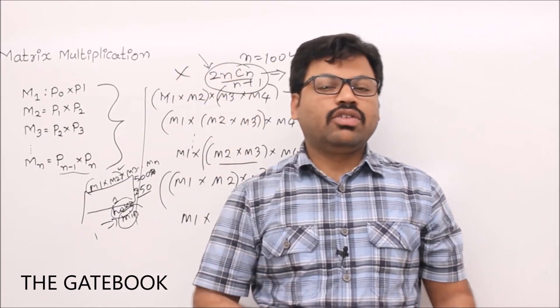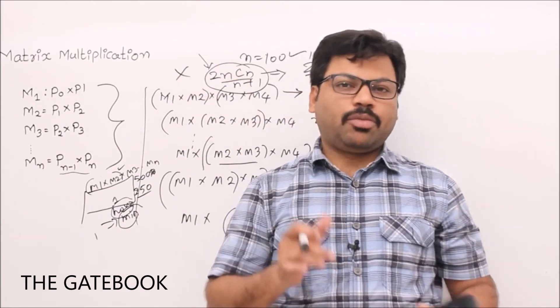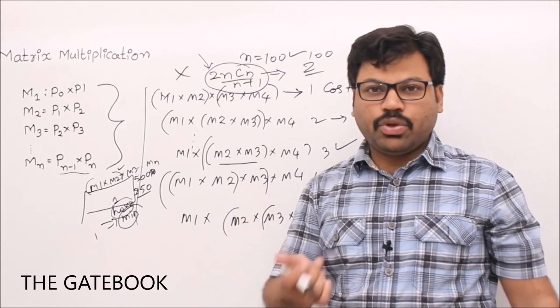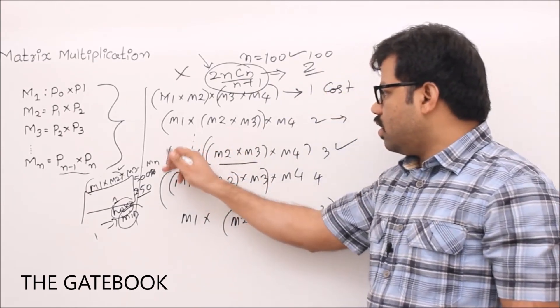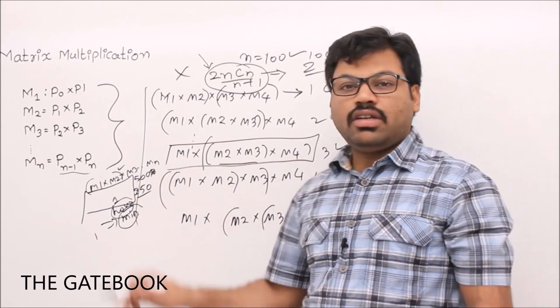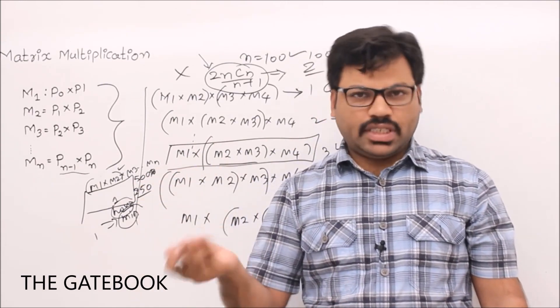We are going to use a method that is dynamic programming method. Using that we can compute the best order - that means we are going to decide the best order in order of n³ time, we will see that.